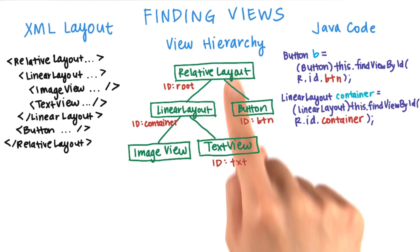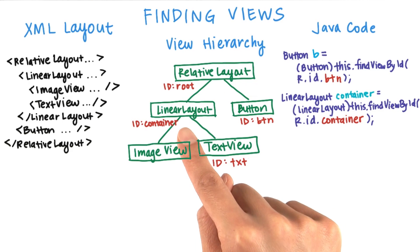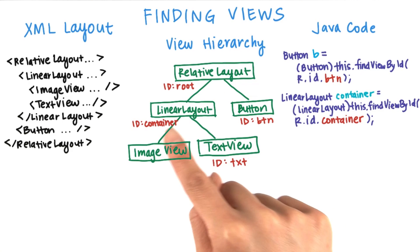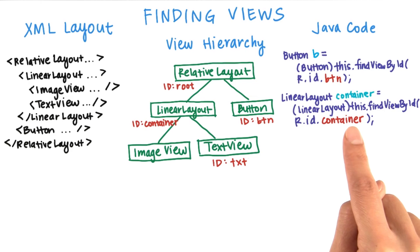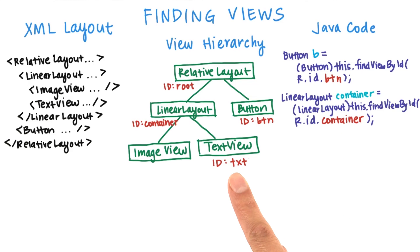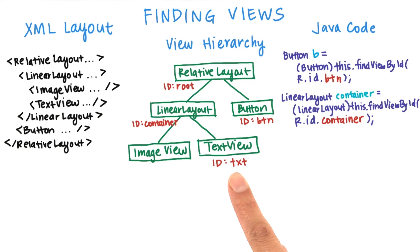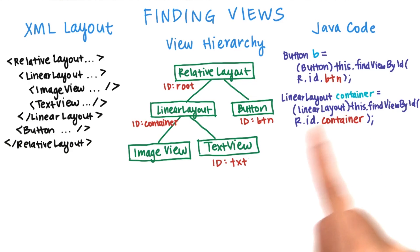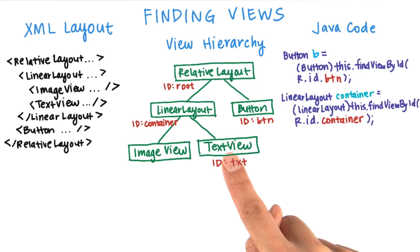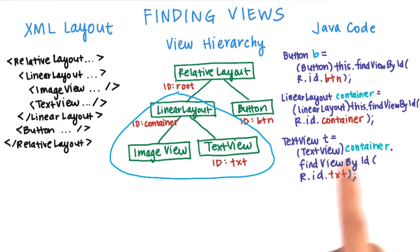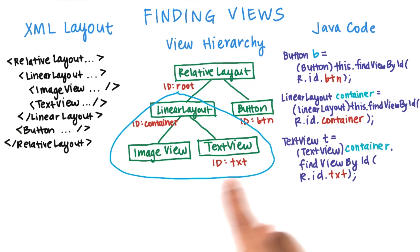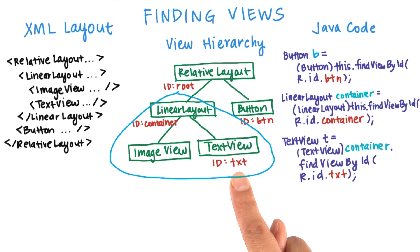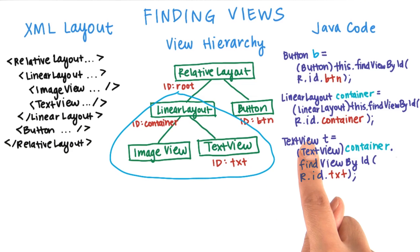Similarly, we can traverse down the view hierarchy to find the linear layout with the ID container, and then return that. We could do the same to find a reference to this text view by traversing down the view hierarchy, but you'll notice that we already have a reference to the container, which is the direct parent of this text view. Hence, we can just call container.findViewById to search this subtree to find the text view with this ID, and then return it.